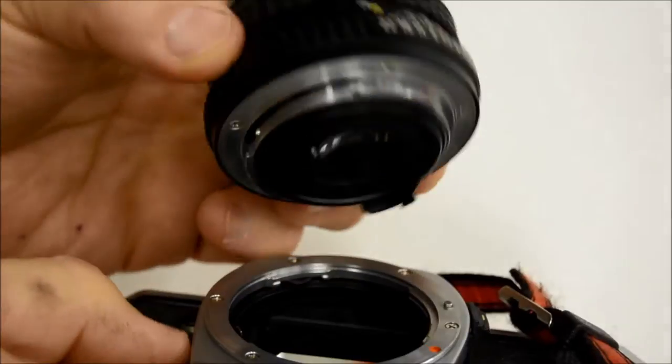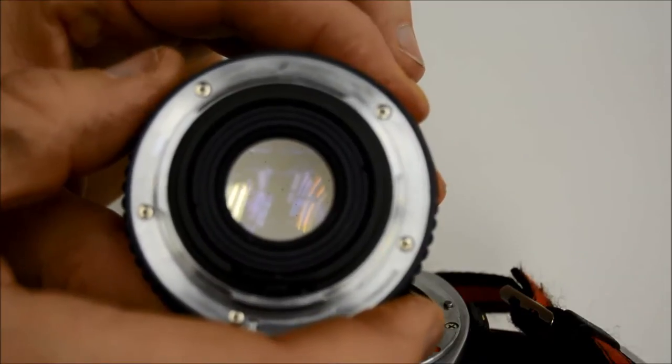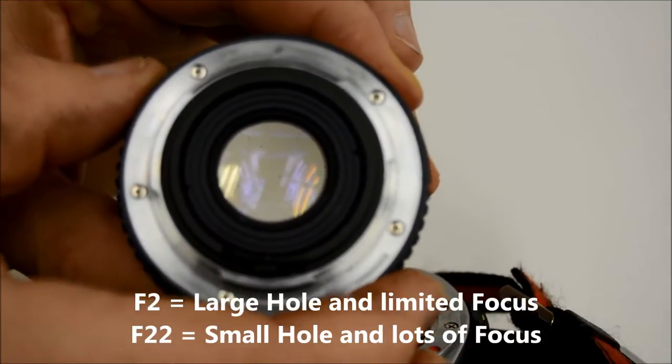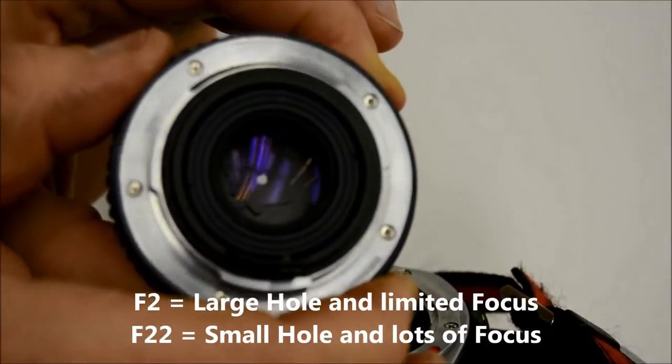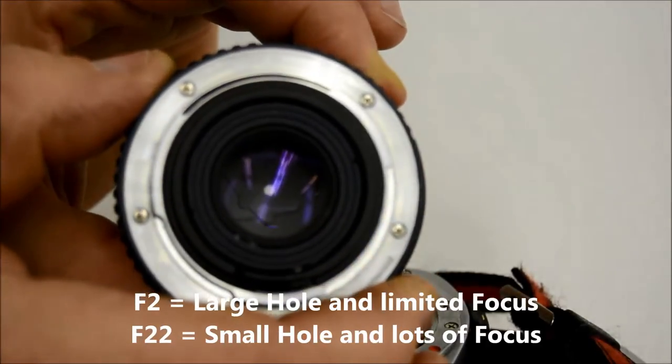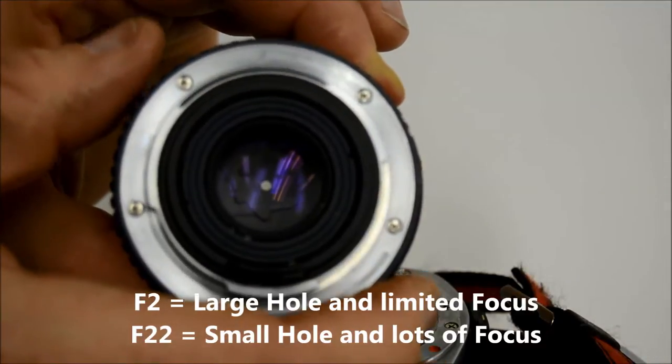So if you take the lens out and take a look at it, f2 would be wide open, and f22 would be a very small hole, much like your pinhole camera. And if you remember from the pinhole camera, at something like f22, you get a lot of things in focus.